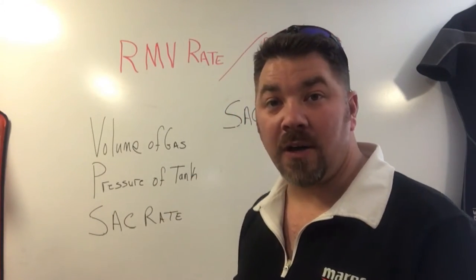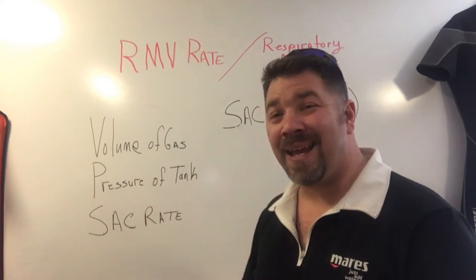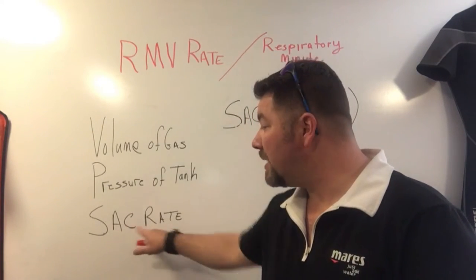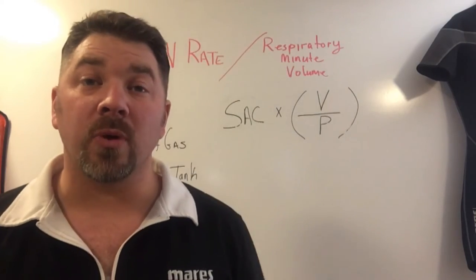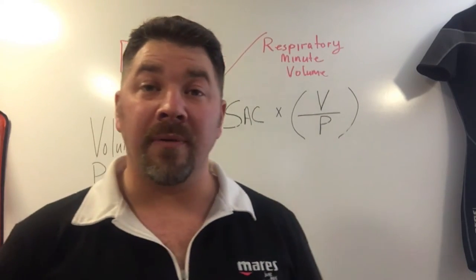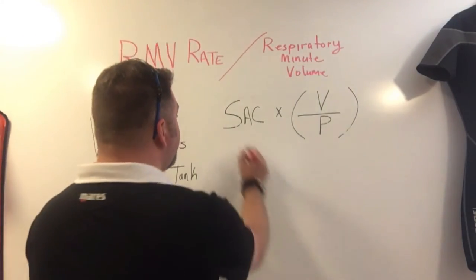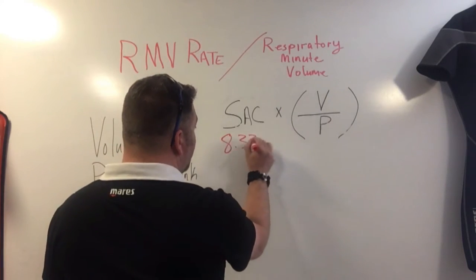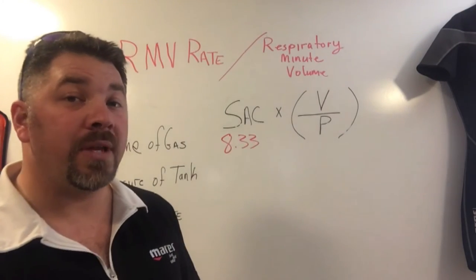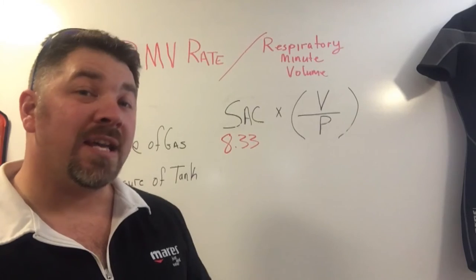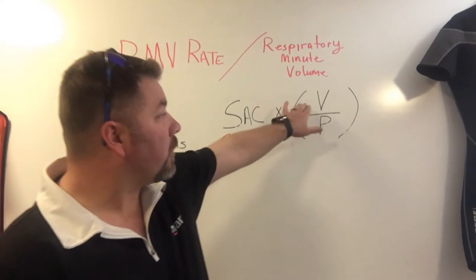There are several variables we need to know: the volume of gas, the pressure of the tank, and the SAC rate. One of the numbers we're going to use from the previous video is 8.33 — that is our SAC rate, simply 8.33 PSI per minute, which is what our theoretical diver was using.